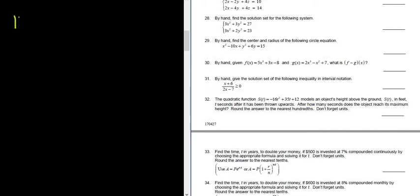Let's work out problem number 31. So we have an inequality. It says, by hand, give the solution set of the following inequality in interval notation. So we have x plus 6 over 2x minus 7 greater than or equal to 0.